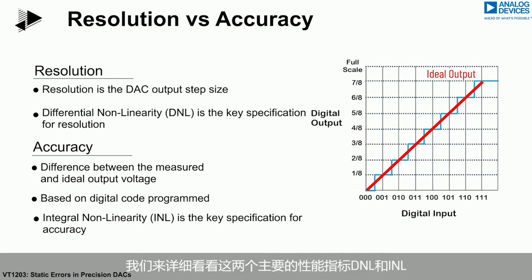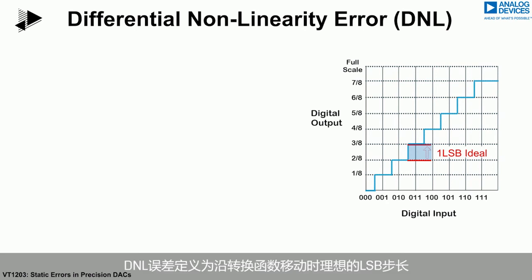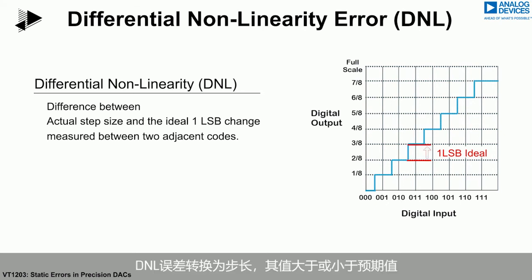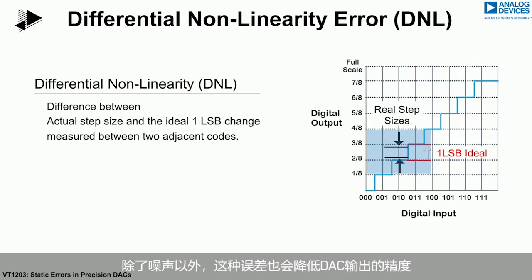We will now take a look at these two key specifications — DNL and INL — in more detail. Starting with the DNL specification: the ideal step size for each DAC code is 1 LSB. The DNL error is defined as the difference between the ideal LSB step and the actual step as one moves along the DAC transfer function. DNL errors translate into step sizes which are larger or smaller than the ideal step size, and this, in addition to noise, reduces the accuracy of the DAC output.